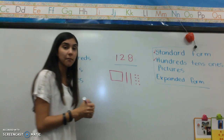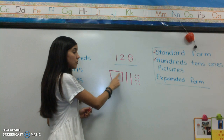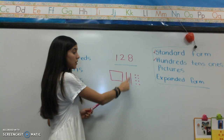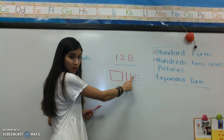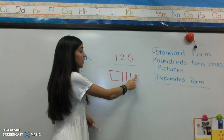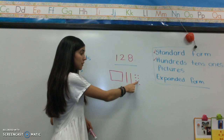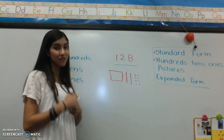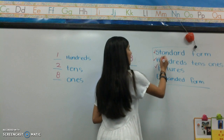And that's how you draw a number. If I count it, I can see that I have 100, 110, 120, 121, 122, 123, 124, 125, 126, 127, 128. So I have officially drawn a picture of the number 128.